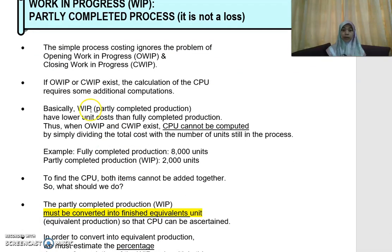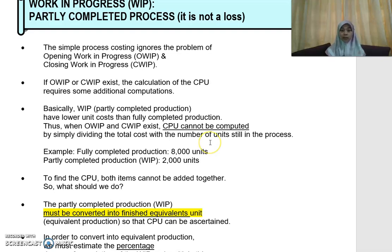What is work in progress? Work in progress has a lower unit cost than the fully completed production. So when you have the opening WIP or the closing WIP, then the cost per unit — you cannot simply compute it directly by dividing the total cost with the number of units that you have in the process.